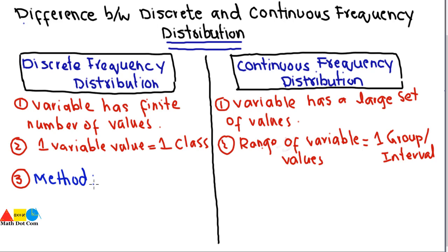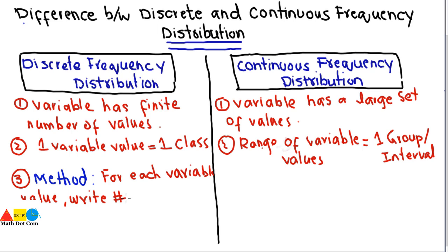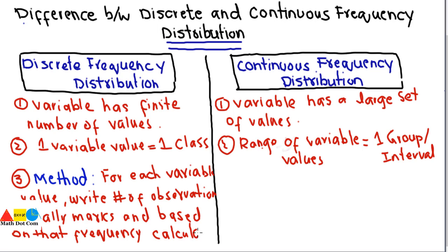The third difference is the method used. In discrete frequency distribution, for each variable value you write the number of observations using tally marks, and based on those tally marks the frequency is calculated. This is the method for making a discrete frequency distribution table.